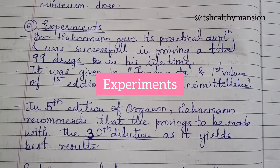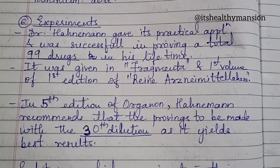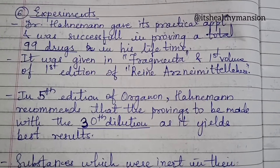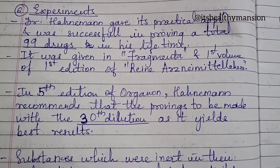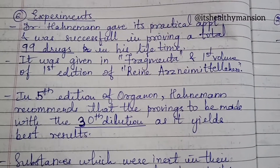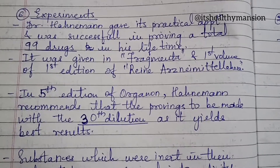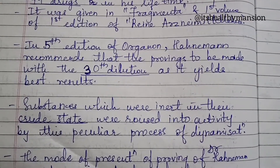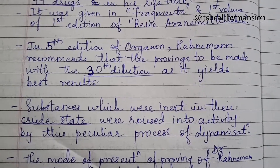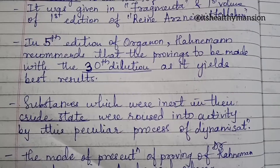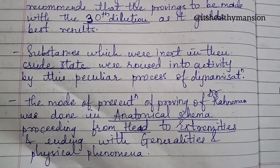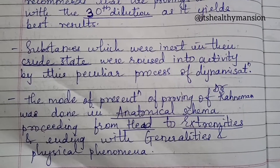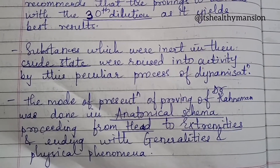Sixth point: Dr. Richard Hughes talks about the experiments. Dr. Hahnemann gave its practical application and was successful in proving a total of 99 drugs in his lifetime. It was given in the Fragmenta and first volume of the first edition of Reine Arzneimittellehre. In the fifth edition of Organon, Hahnemann recommends that the provings be made with the 30th dilution as it yields best results. Substances which were inert in their crude state were roused into activity by this spectacular process of dynamization. The mode of presenting provings of Dr. Hahnemann was done in anatomical schema proceeding from head to extremities and ending with generalities and physical fitness.